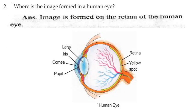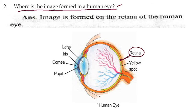Now second: where is the image formed in a human eye? In a human eye, the image is formed on the retina. The eye uses a convex lens, and the image is formed on the retina.